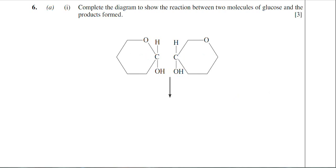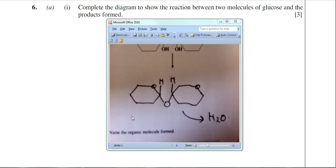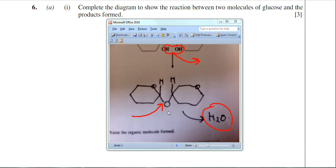The examiner wants us to complete this diagram to show how those two glucose monomers react and join together. I've drawn out the answer. I've joined the two glucose molecules together by a glycosidic bond, and I've shown that water has been released because this is a condensation reaction. The two OHs react together — the OH and the H release water, leaving an oxygen that forms the glycosidic bond.